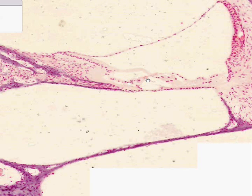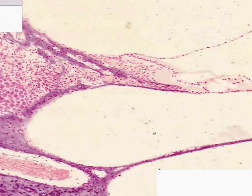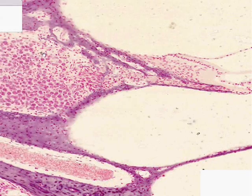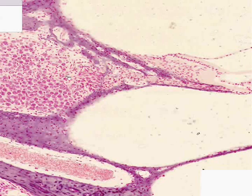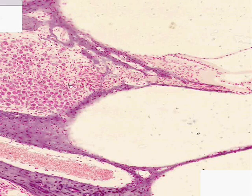You can see very close to the organ of Corti a large ganglion, which is the spiral ganglion, an area of ganglion and some nerves. Everything else here you will recognize classically as being dense bone.